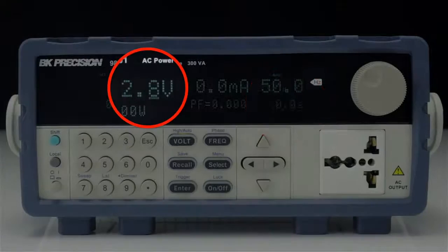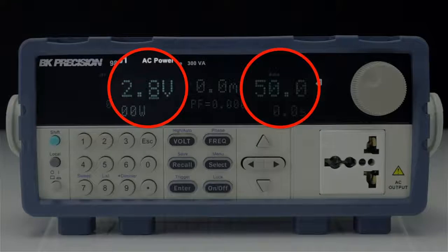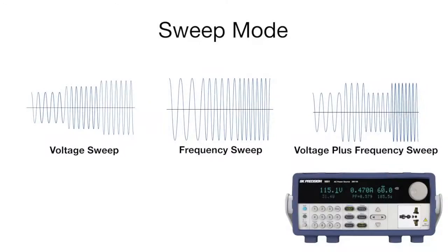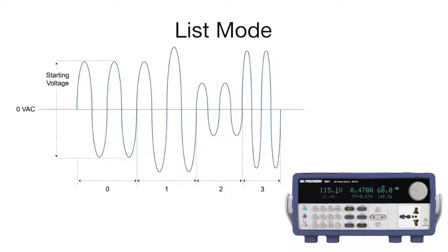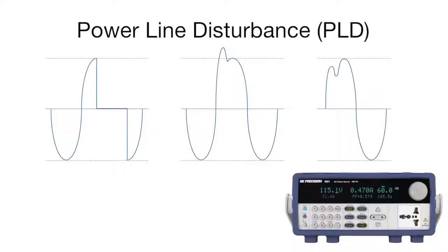Features include programmable voltage and frequency, sweep mode settings for sweeping voltage, frequency, and voltage with frequency, and list mode for generating complex sequences with varying amplitude and frequency. Extended list mode supports a built-in power line disturbance (PLD) simulator for creation of waveform distortions like surge, sag, spikes, and dropouts.